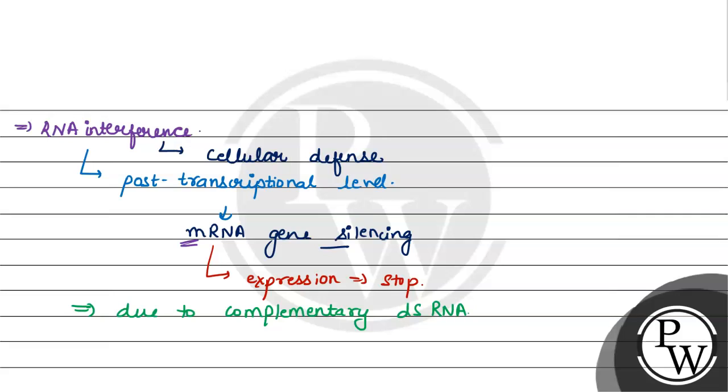Now the complementary double-stranded RNA stops this undesirable mRNA expression. And this double-stranded RNA, what can it be? The first source is RNA virus. We have RNA with sense and anti-sense strands. So what can we conclude from here?